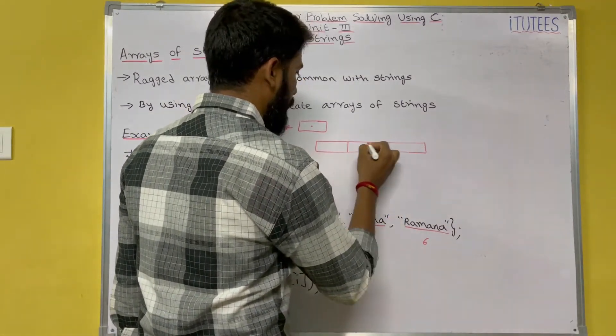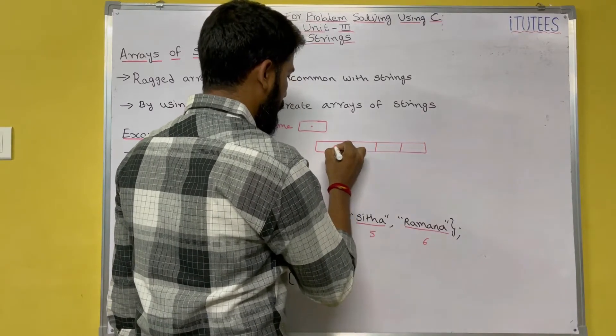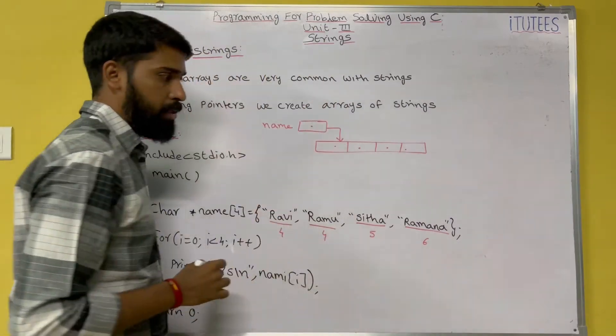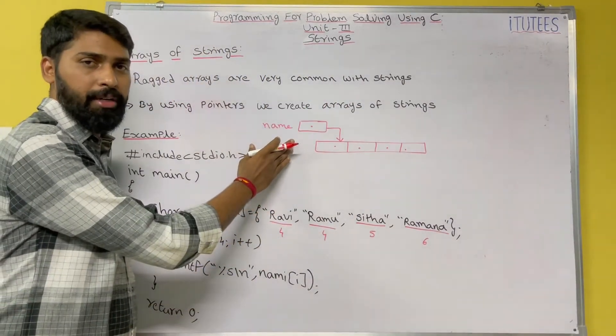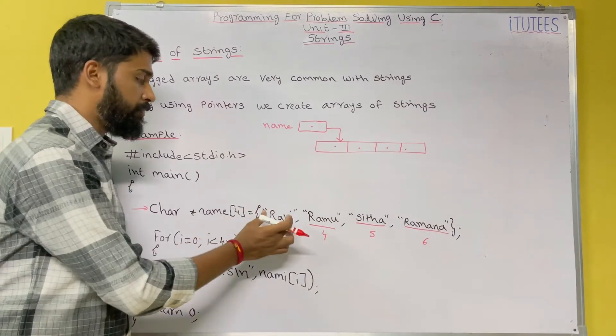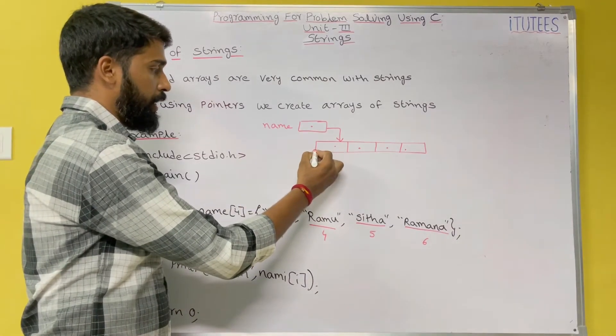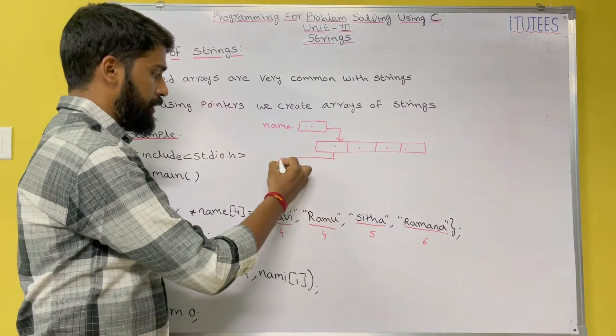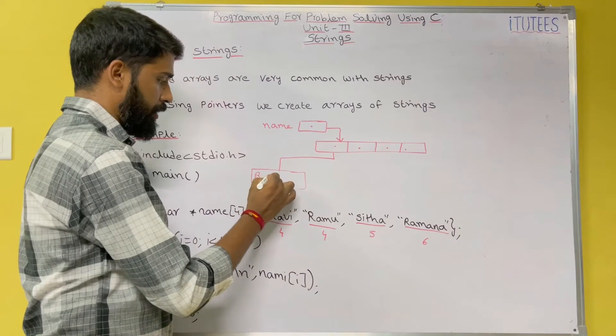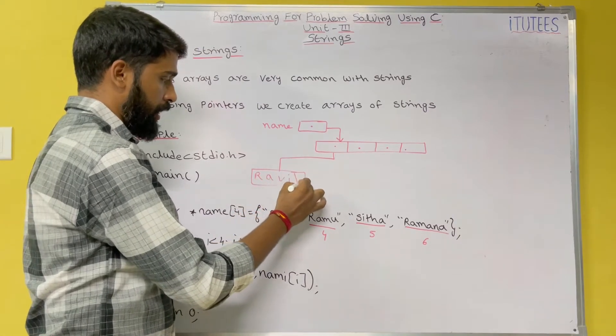How many pointers? 1, 2, 3, 4. So this pointer indicates another 4 pointers. The first is also a pointer, and it indicates one string. What is the string? Ravi \0.